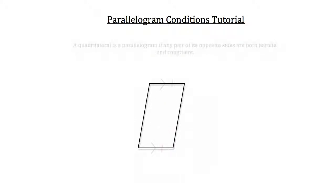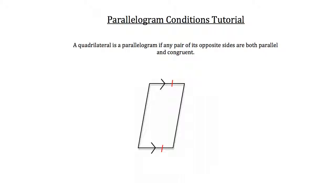And lastly, a quadrilateral is a parallelogram if any pair of its opposite sides are both parallel and congruent. Here we've indicated that the top and bottom are both parallel and congruent. However, if the left and right sides of this quadrilateral were both parallel and congruent, then this quadrilateral would also be a parallelogram.